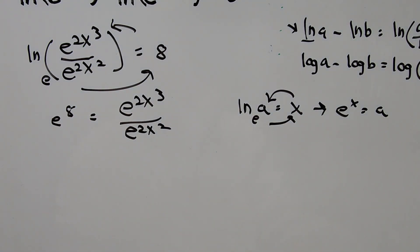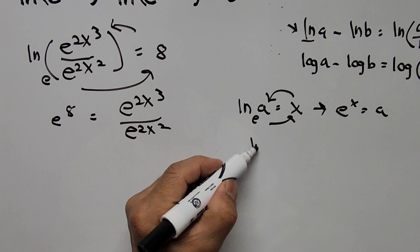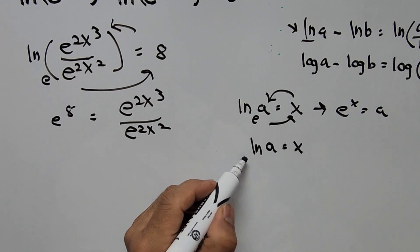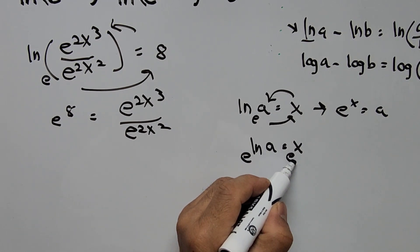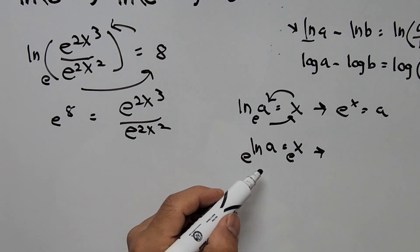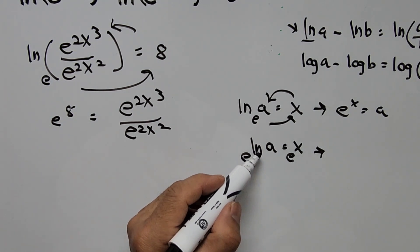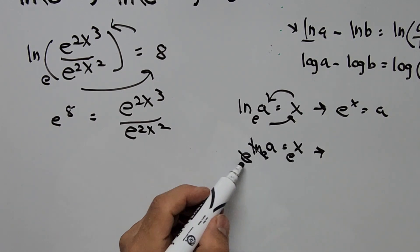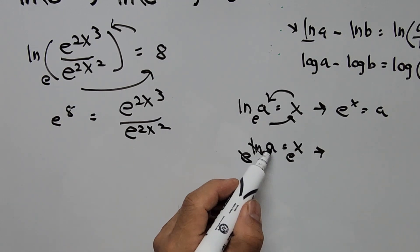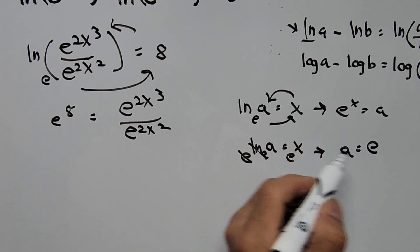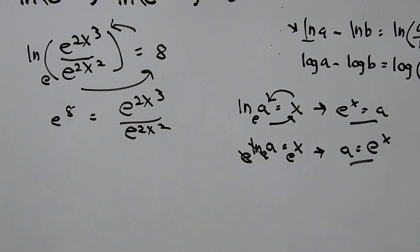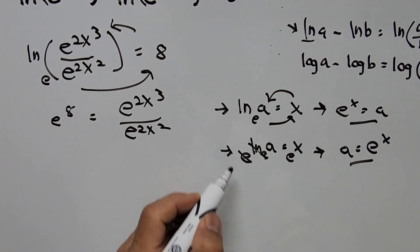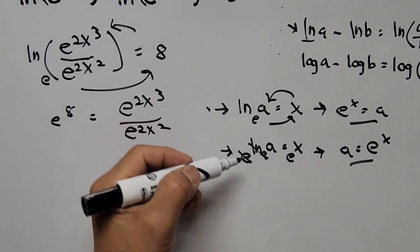Alternatively, if natural logarithm of a equals x, we can exponentiate both sides with base e. We get e raised to ln of a — since ln base e equals 1, that cancels — and we end up with a equals e to the power of x. Either approach gives the same result, so going back to our equation we use the first formula.